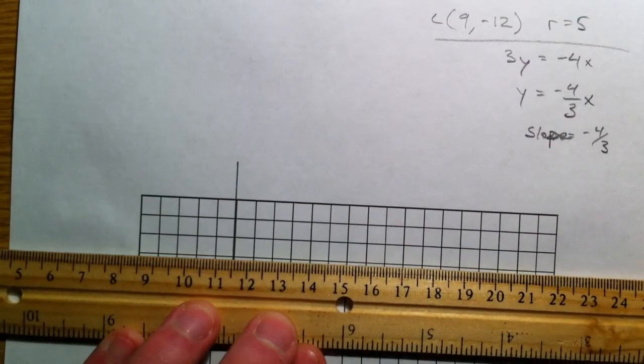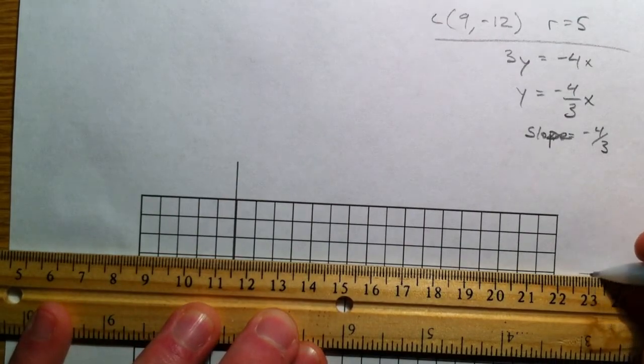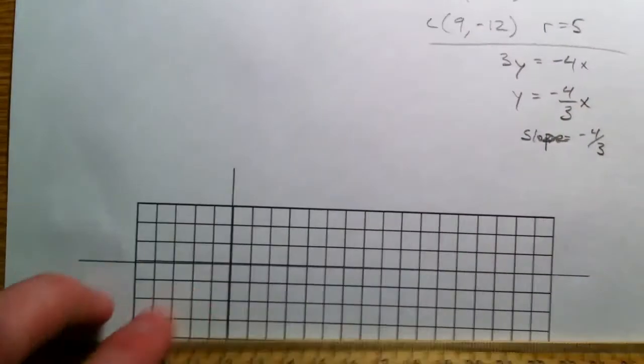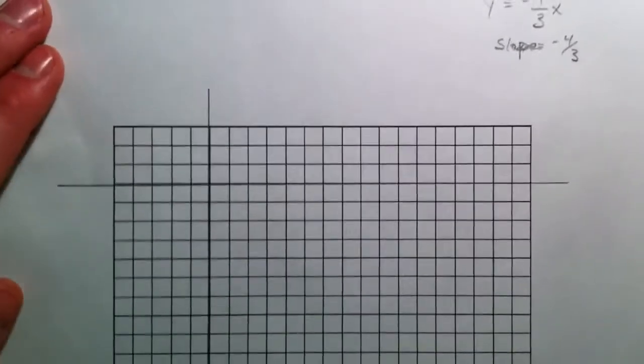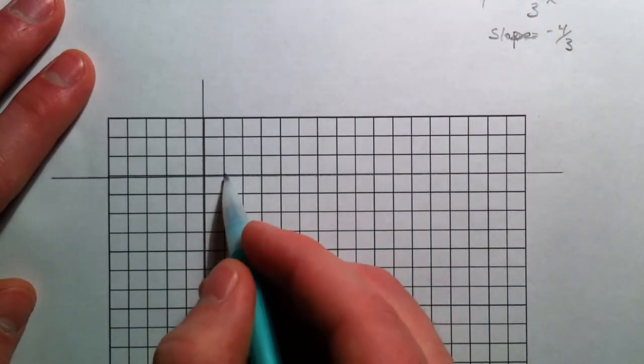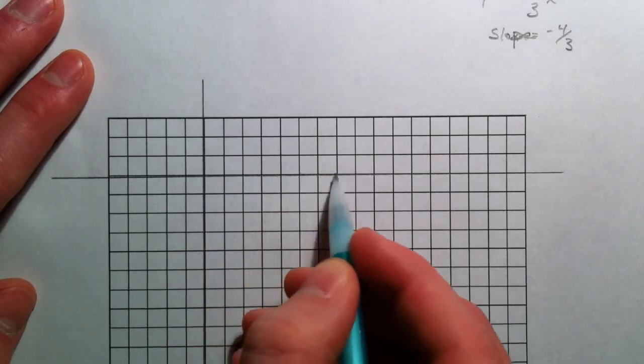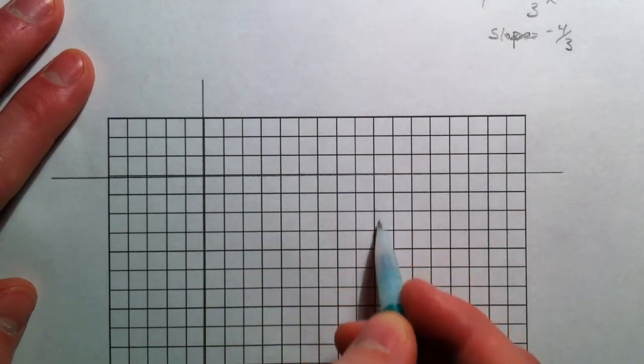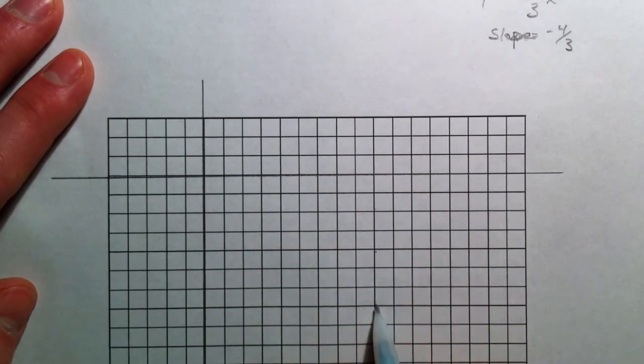So, I'm going to make this really high just so that we have room. That's our grid. Our center was 9, negative 12. So, counting: 1, 2, 3, 4, 5, 6, 7, 8, 9, and then 1, 2, 3, 4, 10, 11, 12.